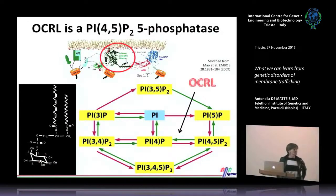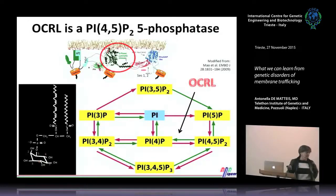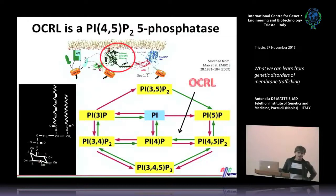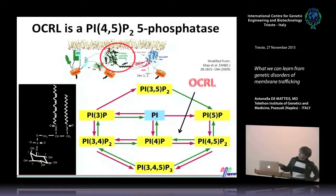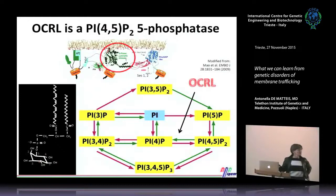Phosphoinositides are a minor component of our cell membranes — altogether less than 10% of phospholipids — but they are very important signaling molecules. They are called phosphoinositides because the polar head is an inositol ring. This inositol ring can be phosphorylated at positions 3, 4, or 5, giving rise to monophosphorylated species PI3P, PI4P, or PI5P. They can also be phosphorylated at two positions simultaneously, yielding bisphosphorylated species PI(3,4)P2, PI(3,5)P2, and PI(4,5)P2.